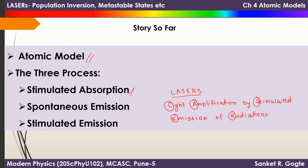We discussed stimulated absorption, which means if we have a system with two energy levels E1 and E2, then a photon of frequency nu equal to (E2 minus E1) divided by h can excite a system which is in the lower energy state E1. In this process the photon of frequency nu is absorbed, causing the system to excite into the higher energy level. This process is called stimulated absorption.